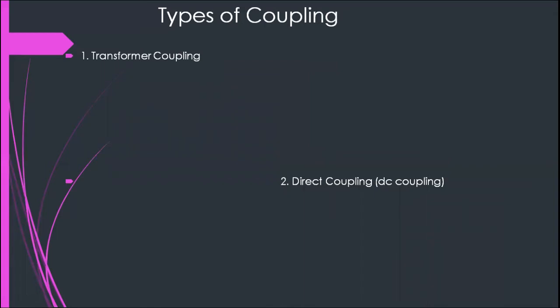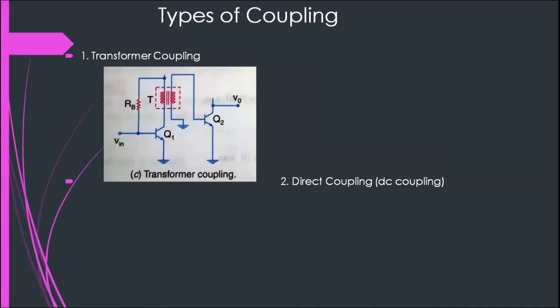Then we have another type of coupling scheme called transformer coupling — it's the third type of coupling. In this method, the primary winding of a transformer acts as the collector load; there is no resistor at the collector. Then the secondary winding conveys the AC output signal directly to the base of the next stage. There is no coupling capacitor in transformer coupling. Such coupling schemes are called transformer coupling multi-stage amplifiers.